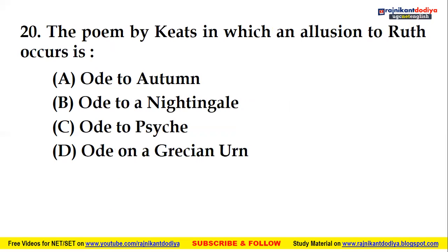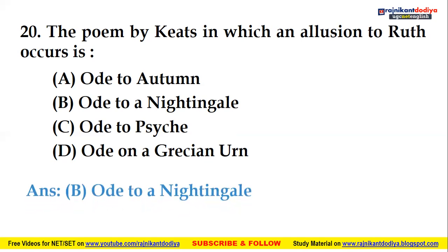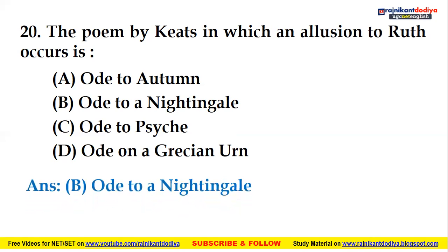Next: which poem by Keats contains an allusion to Ruth? The four options are: Ode to Autumn, Ode to a Nightingale, Ode to Psyche, or Ode on a Grecian Urn. The right answer is Ode to a Nightingale — the poem by John Keats in which an allusion to Ruth occurs.